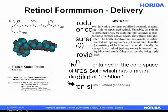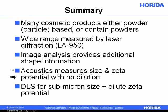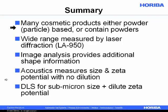We started by looking at powders and how they can be measured, and a wide range of them could just be measured using a single laser diffraction instrument, the LA-950. If you want shape information, we might use image analysis to get the shape of glitter flakes. We can use acoustics to measure both the size and zeta potential, with the additional benefit that there is no dilution with our measurements. If we're doing measurements all below a micron, we can use dynamic light scattering, which can be used for particle size and zeta potential of dilute systems.